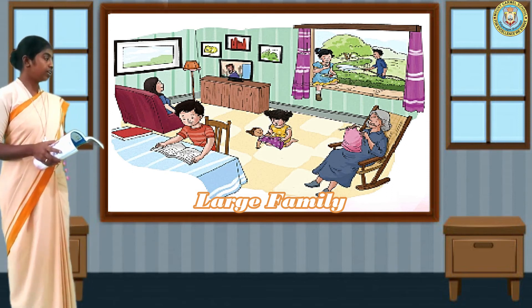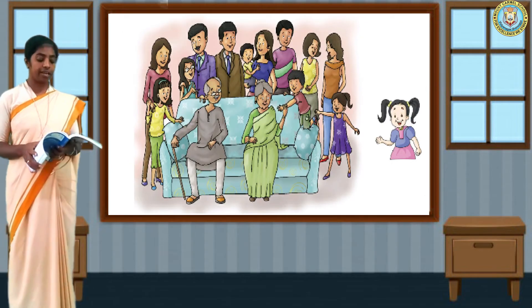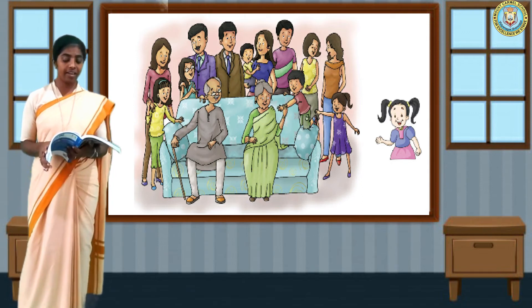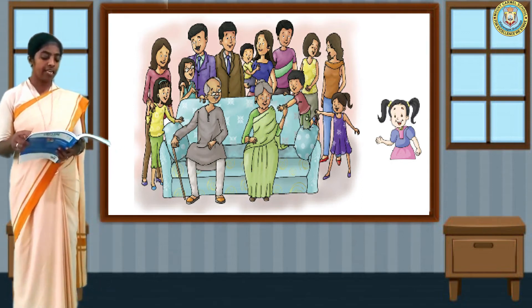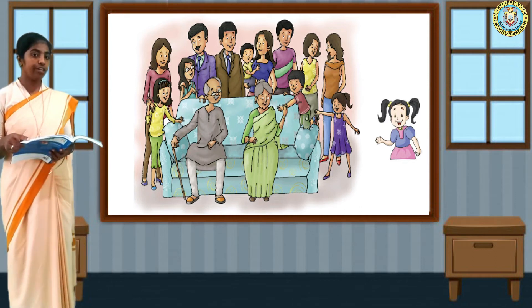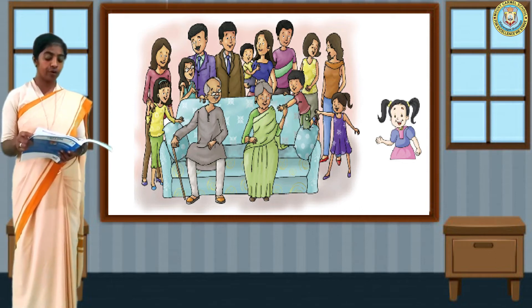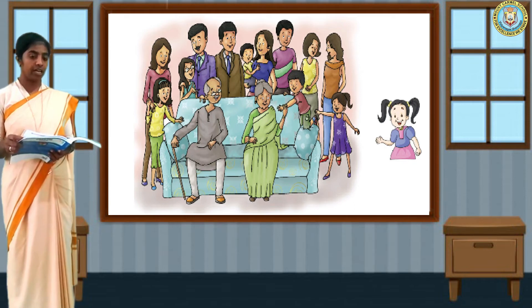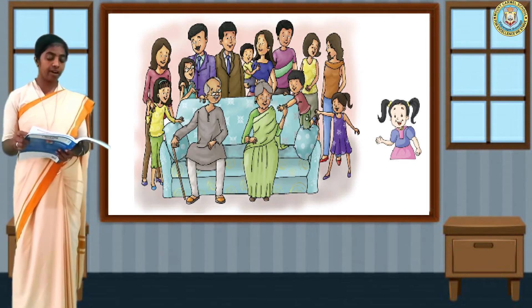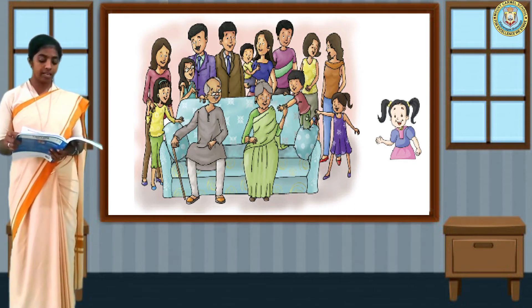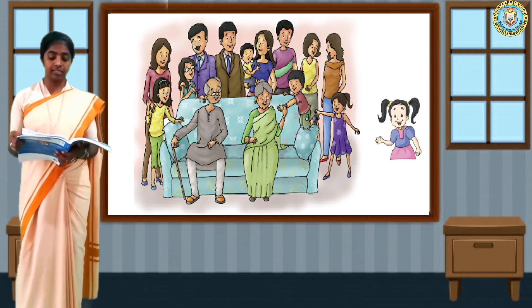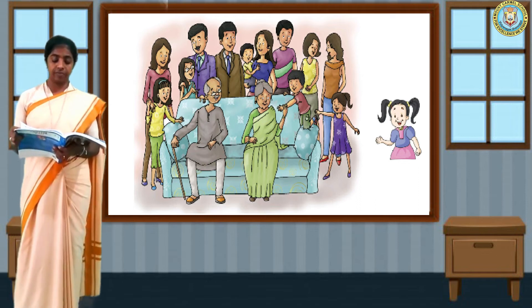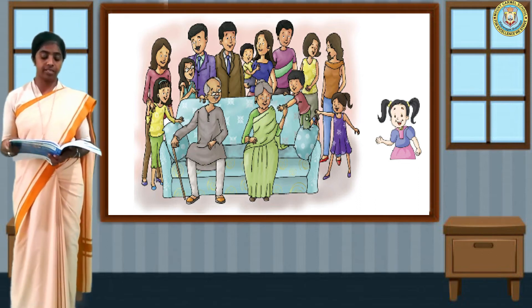Now we shall see the joint family. Hi, I am Neha. I live in a joint family of 14 members. I live with my grandfather, grandmother, mother, father, uncles, aunts, cousins, and my younger brother.